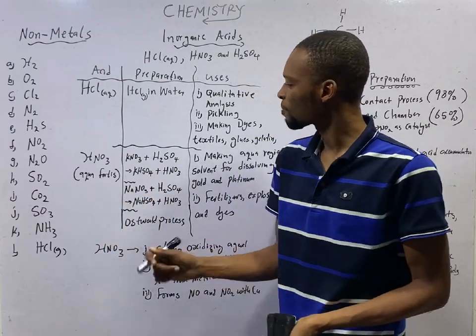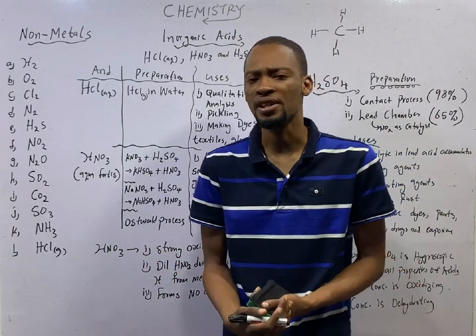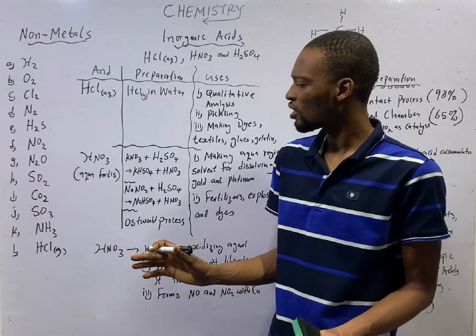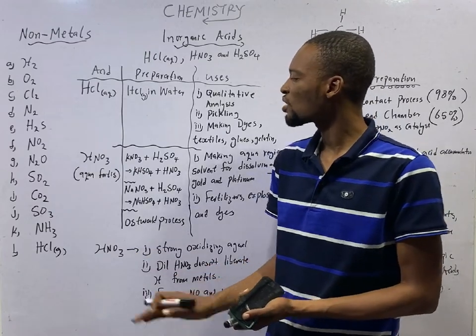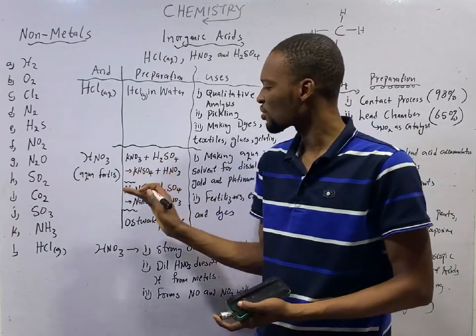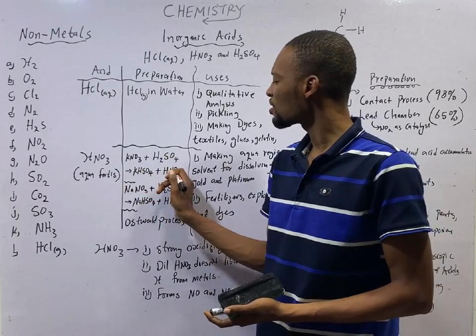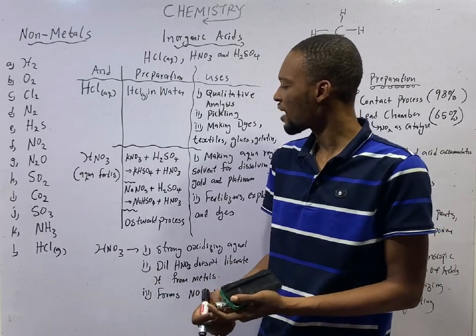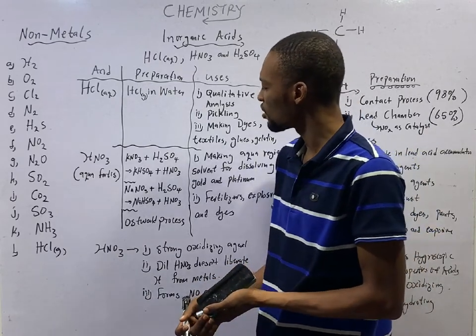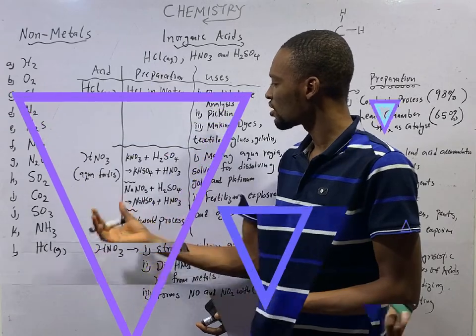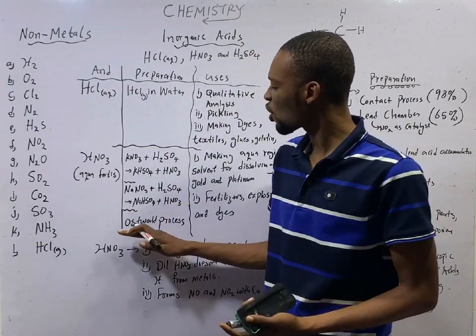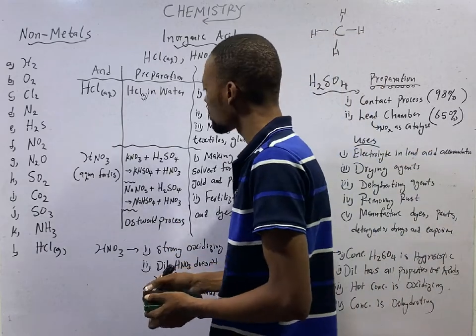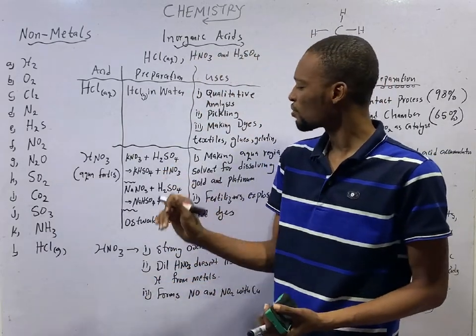To prepare HNO3, you react KNO3 with H2SO4. That is, potassium trioxonitrate(V) reacting with tetraoxosulphate(VI). One of the products is HNO3. Or, sodium trioxonitrate(V) with H2SO4. You get HNO3. Another way to prepare HNO3 is Ostwald process. This is industrial preparation of trioxonitric(V) acid.